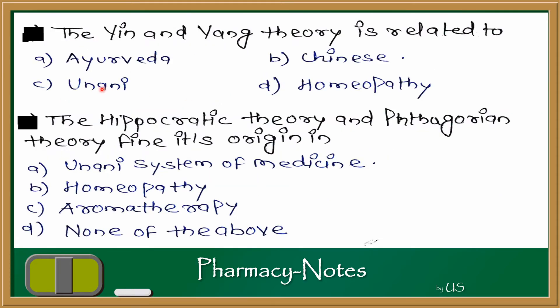Next question: the Yin and Yang theory is related to which system? The options are Ayurveda system, Chinese system, Homeopathy, and Yunani. The Ayurveda system depends on the three-dosha theory. In the Chinese system, the body is described in two phases — light and dark — which are known as Yin and Yang. So the answer is option B, Chinese system.